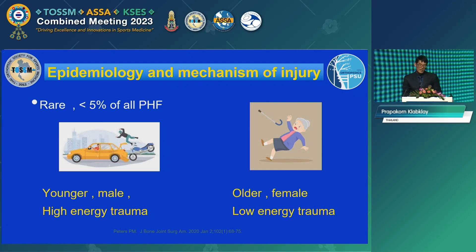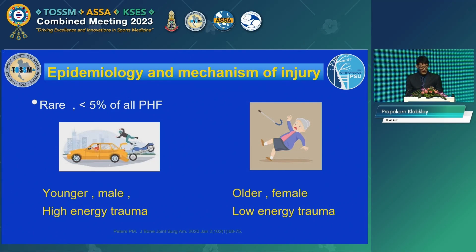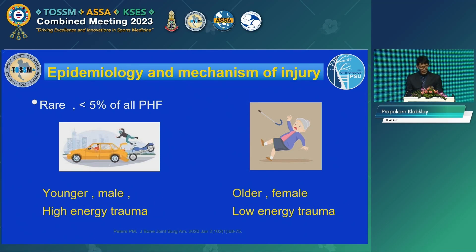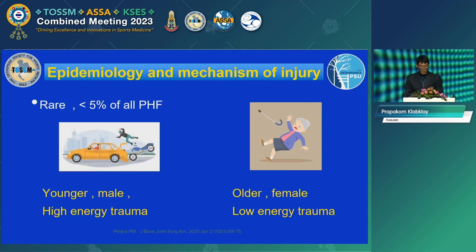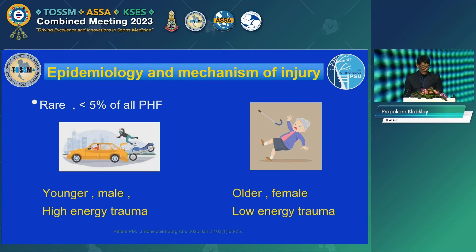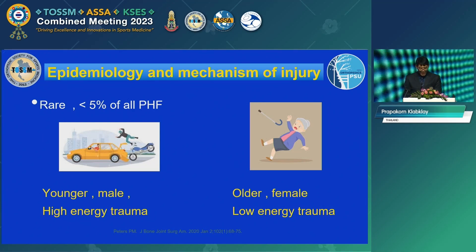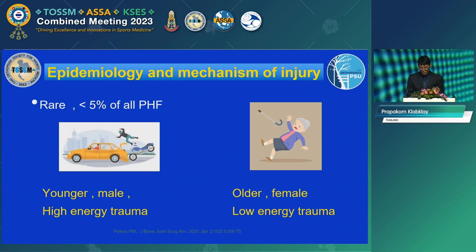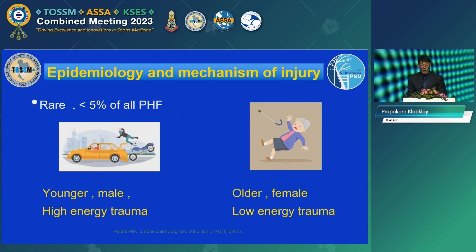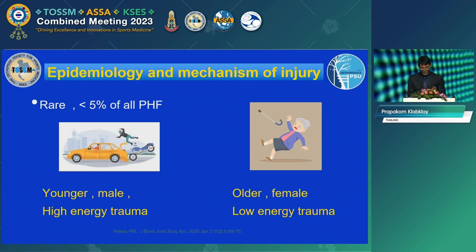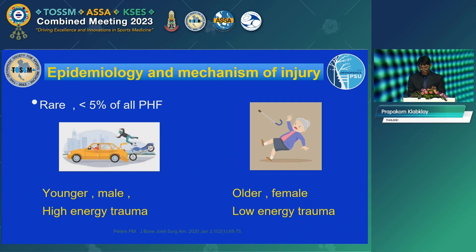We can divide patients with head-split fractures into two groups. The first group is younger patients, male predominant. For this group, the cause of injury is high-energy trauma, bone quality is good, and they have potential for re-vascularization. The second group is older patients, female predominant, with low-energy trauma and typically poor bone quality with limited regenerative power.